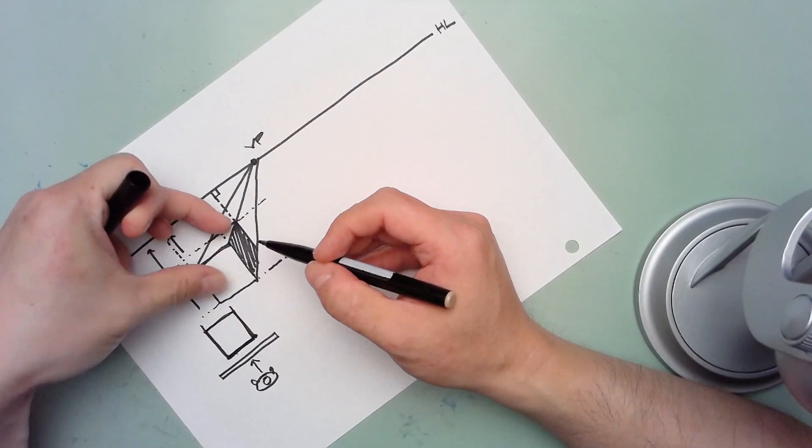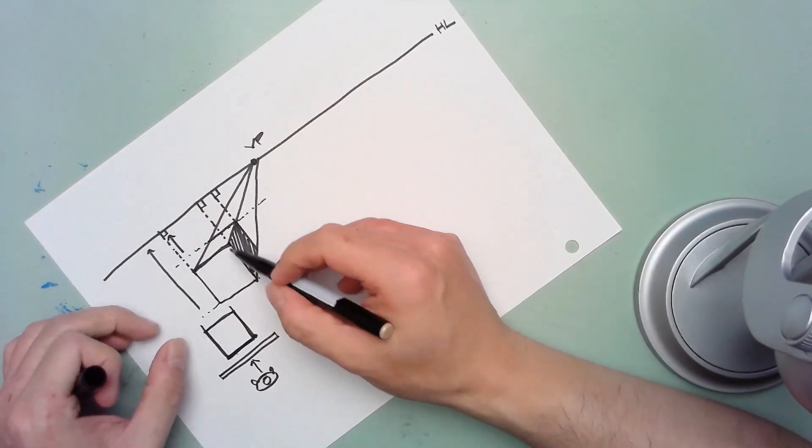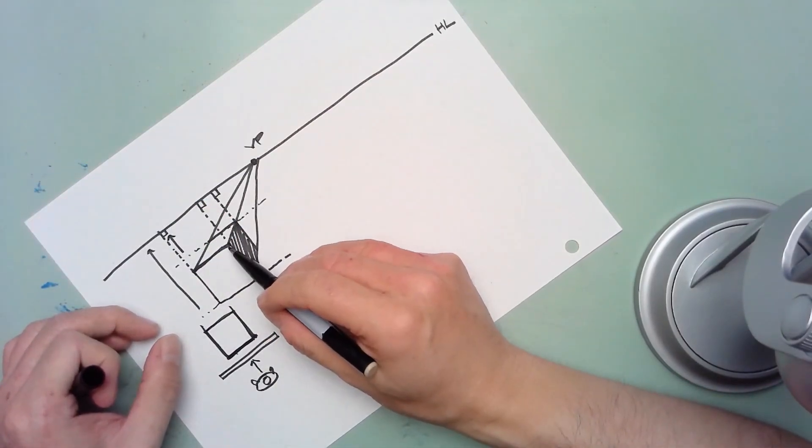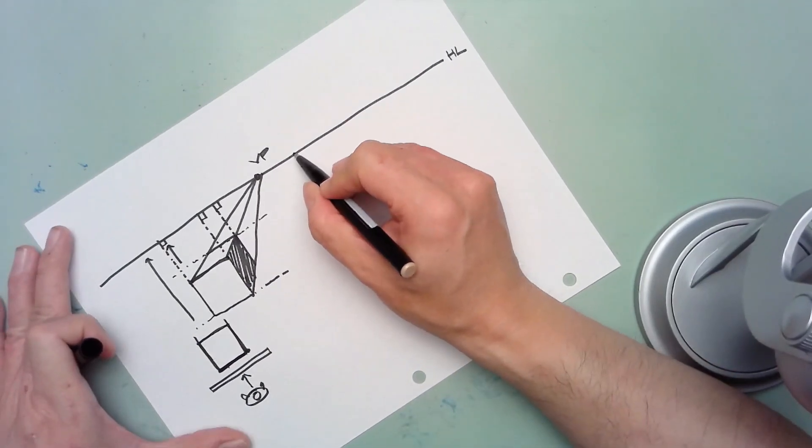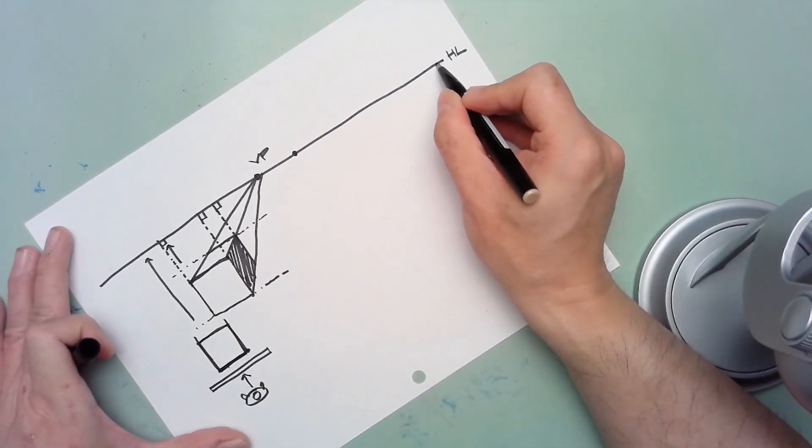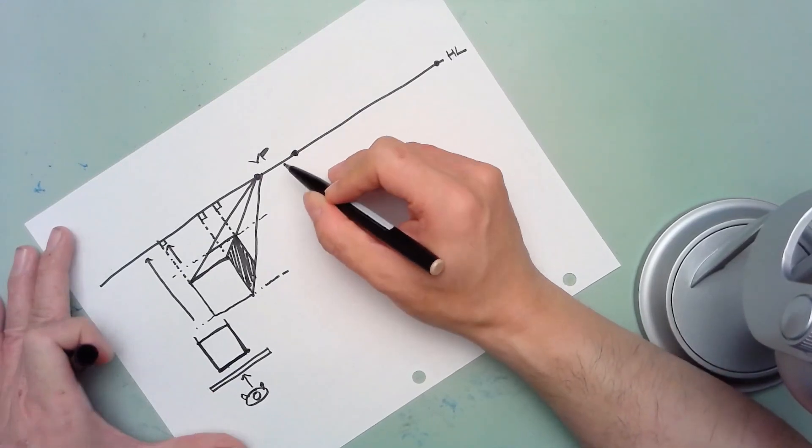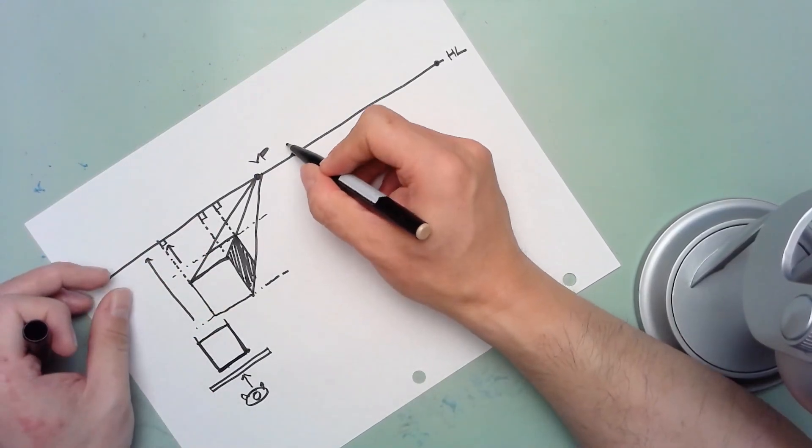Now what if you wanted to actually turn this cube so that you're viewing this cube from edge on? That is why you will need the two-point perspective drawing system in order to rotate an object like that.